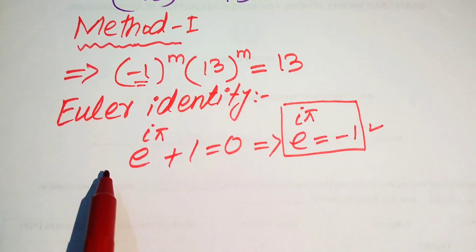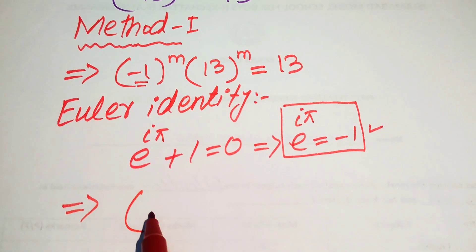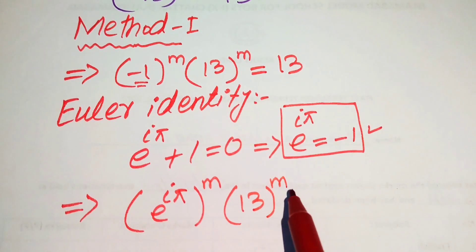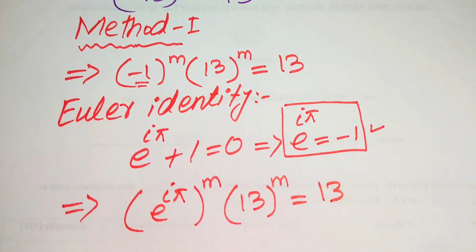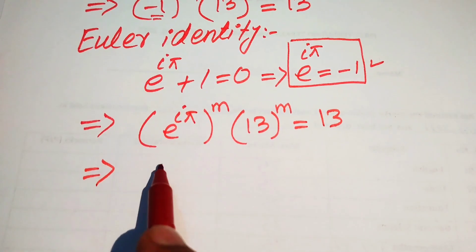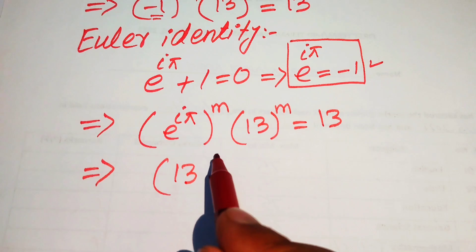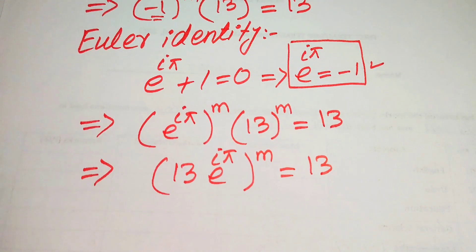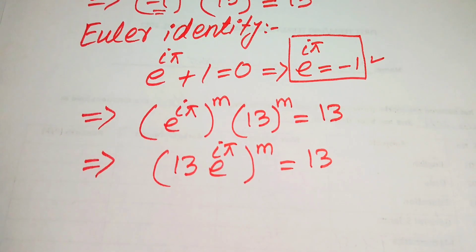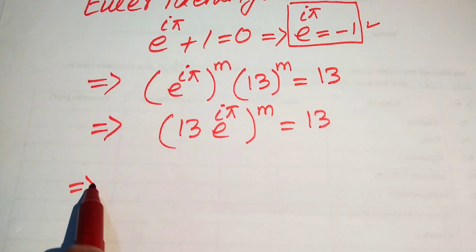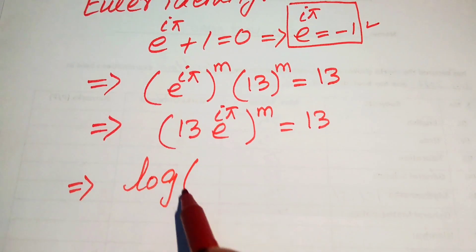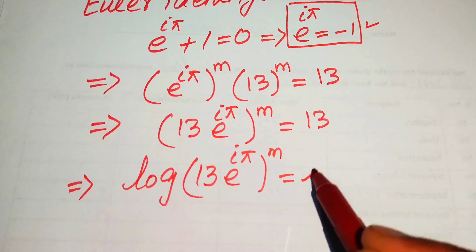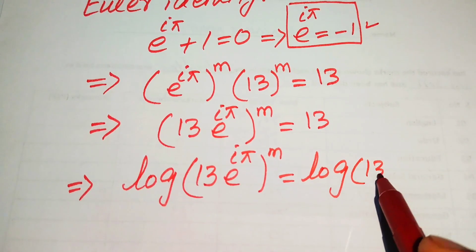After substitution, the equation becomes (e^(iπ))^m times 13^m equals 13. We combine the terms and rewrite the left side as 13 · (e^(iπ))^m equals 13. Then we take the common logarithm on both sides, giving log[13 · (e^(iπ))^m] = log(13).